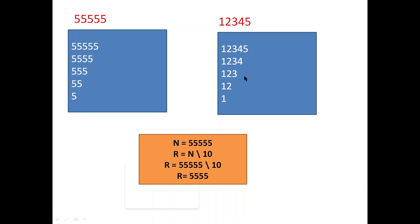To remove the last digit, we use integer division. For example, if the number is 5 5 5 5 5 (five digits), the formula is: any number integer division 10 will remove the last digit of the given number. The number can be any value — integer division by 10 will remove the last digit and return the remaining value.